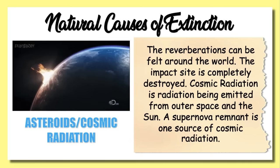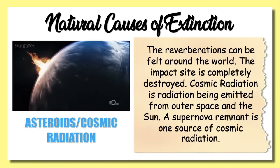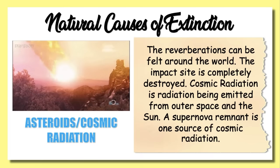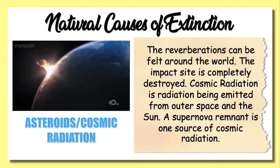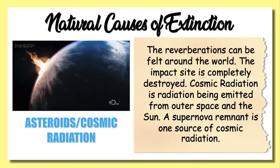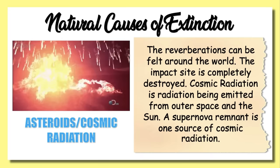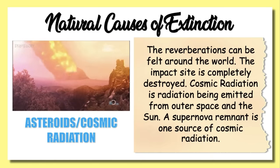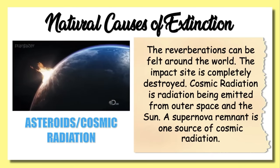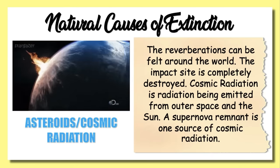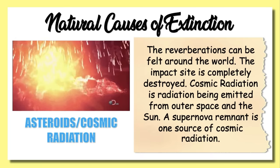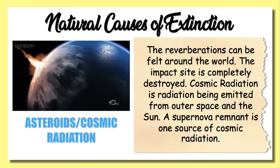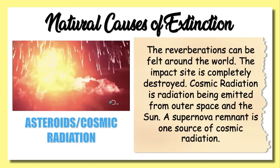Asteroids hit the Earth with extreme force, and the reverberations can be felt around the world — the impact site is completely destroyed. Cosmic radiation is radiation emitted from outer space and the sun. It is hypothesized that exposure to too much cosmic radiation can mutate genes, potentially weakening a species' gene pool in the future. Since the radiation comes from space and the sun, it is extremely difficult to avoid. A supernova remnant is one source of cosmic radiation.